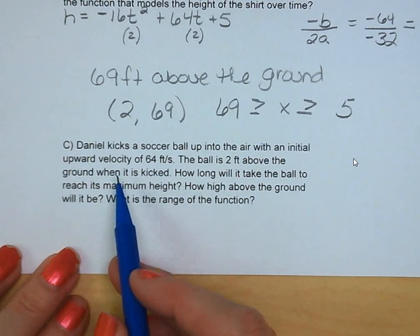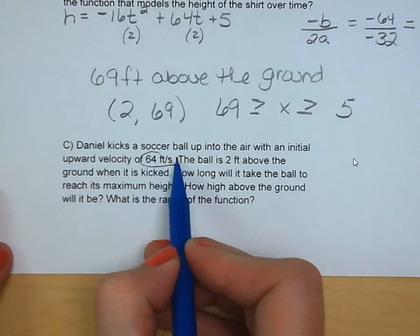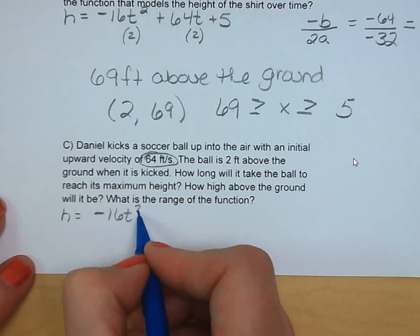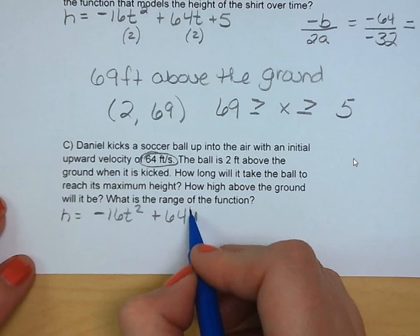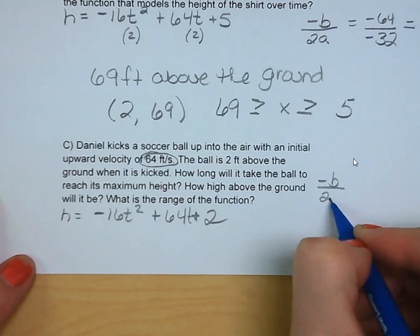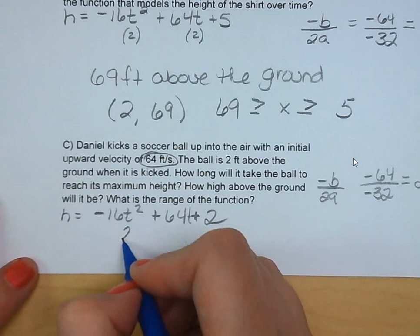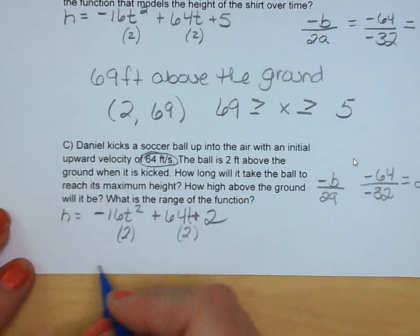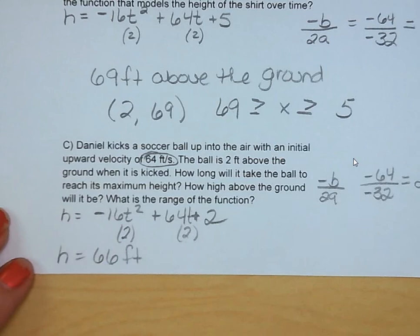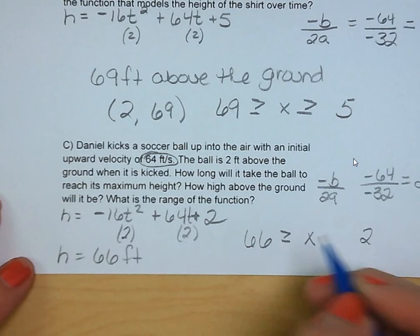Our last problem for the day, Daniel is kicking a soccer ball up into the air with an initial upward velocity of 64 feet per second. The ball is 2 feet above the ground when it is kicked, and we want to know how long it's going to take it to reach its maximum height and how high that will be. So we plug these two pieces of information in. We've got negative 16t squared plus 64t plus 2. So the opposite of b is negative 64 over 2 times negative 16, which is negative 32. We're going to find this is 2 seconds into the air. We plug that into our equation, and we're going to get an output of 66 feet. So our range of this one is between 66 feet and 2 feet.